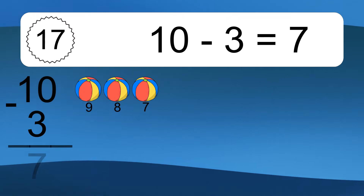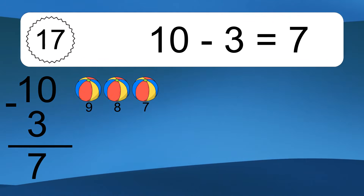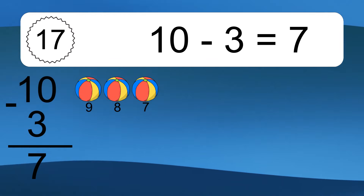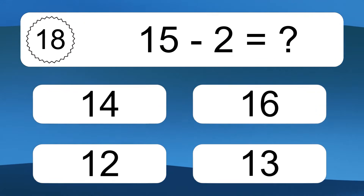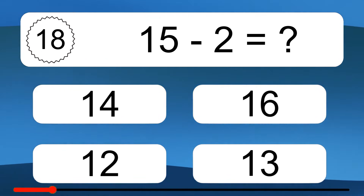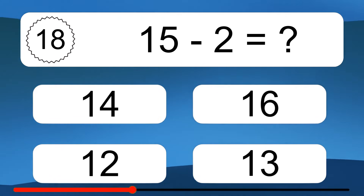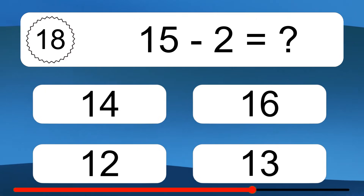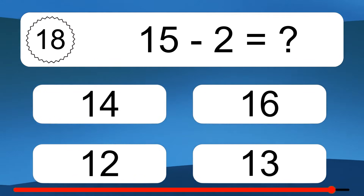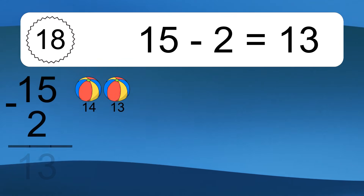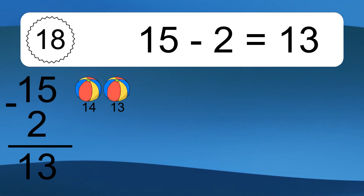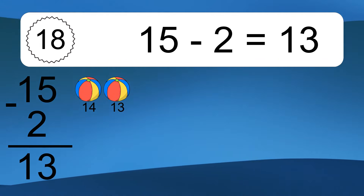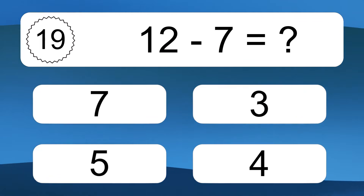10 minus 3 equals 7. Let's count it: 9, 8, 7. 15 minus 2 equals what? 15 minus 2 equals 13. Let's count it: 14, 13. 12 minus 7 equals what?